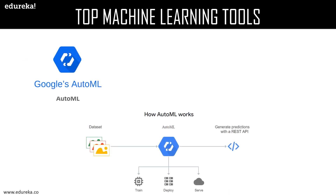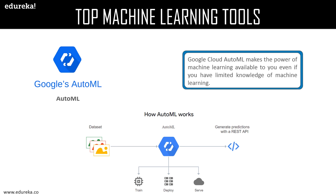Google also offers the Google Cloud AutoML, which makes the power of machine learning available even if you have limited knowledge of machine learning. Google's human labeling service can put a team of people to work annotating or cleaning your labels to ensure your models are trained on high-quality data. They have various products for different purposes: AutoML Vision for images, AutoML Video Intelligence for video, AutoML Natural Language for structuring and understanding text, AutoML Translation for dynamically detecting and translating between languages, and AutoML Tables for building models on structured data.